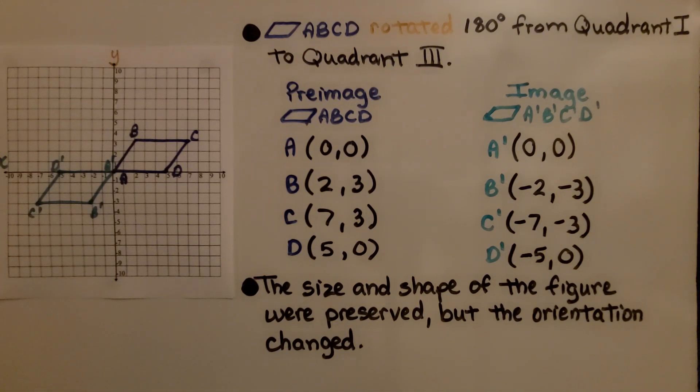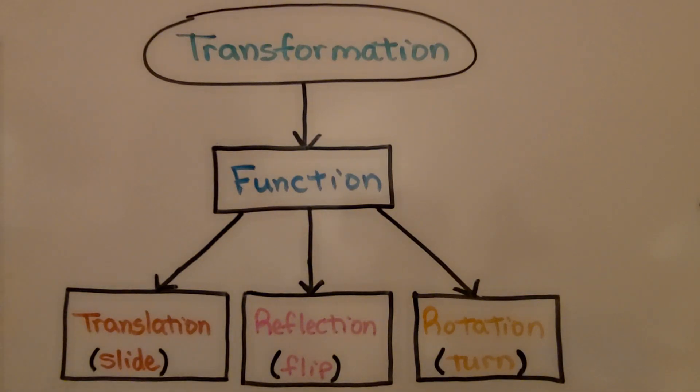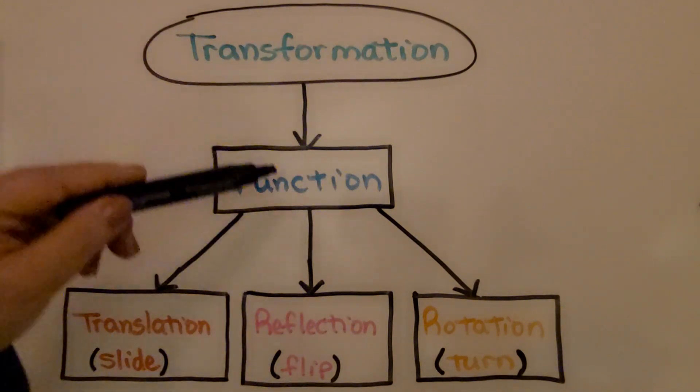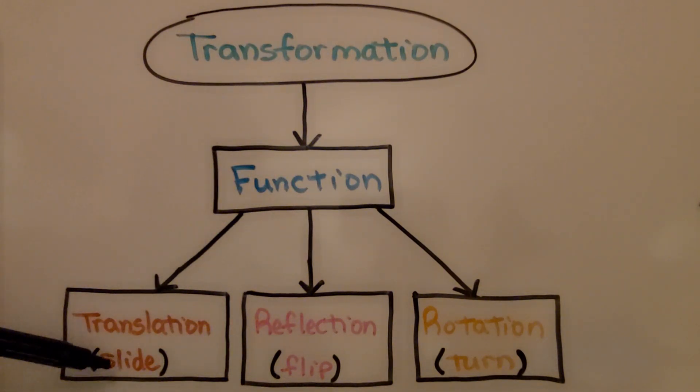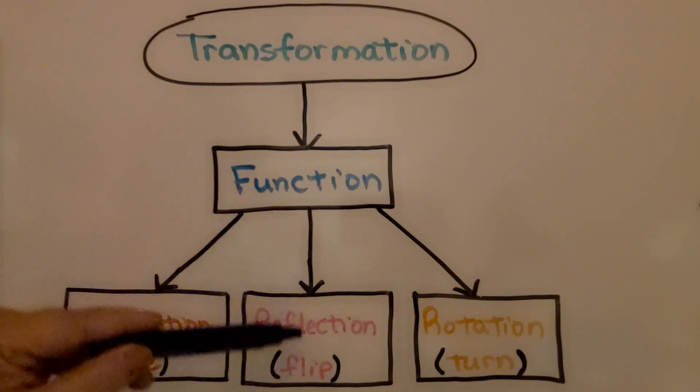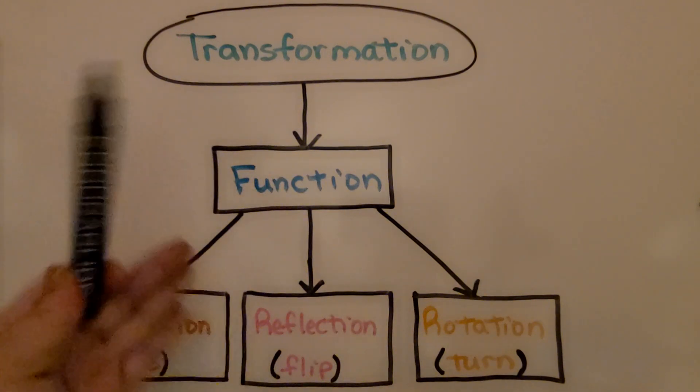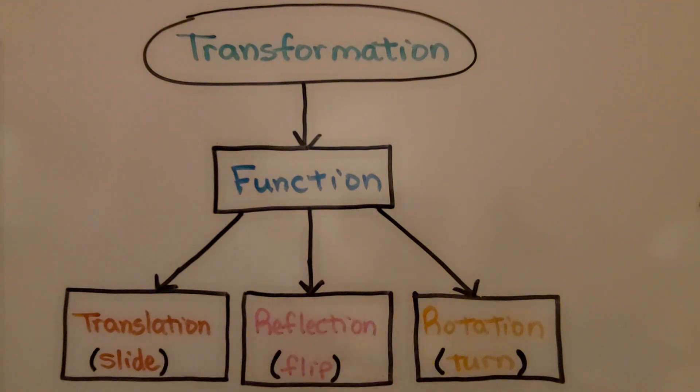The size and shape of the figure were preserved, but the orientation changed. So for transformations, which are functions, we have translations, which are a slide, reflections, which are a flip, and rotations, which are a turn.